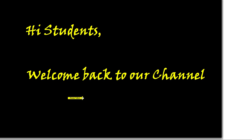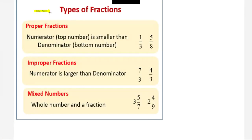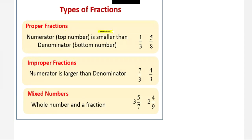Hi students, welcome back to our channel! Let's see how to convert improper fractions to mixed numbers. Before that, I'll explain the types of fractions. Proper fractions: the numerator, or top number, is smaller than the denominator, which is the bottom number. Examples of proper fractions: 1 over 3, 5 over 8.